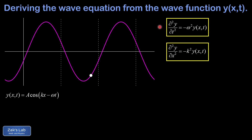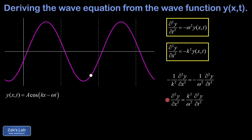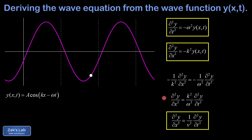Now we have two equations relating second partial derivatives to the original wave function. We solve each for the original wave function and set them equal. The first gives y equals negative one over omega squared times the second partial of y with respect to time, and similarly for the second. Setting them equal yields the second order partial differential equation: the second partial with respect to x equals k squared over omega squared times the second partial with respect to t. Since wave velocity is omega over k, the coefficient is one over v squared, giving us the one-dimensional wave equation describing the motion of waves on a string.